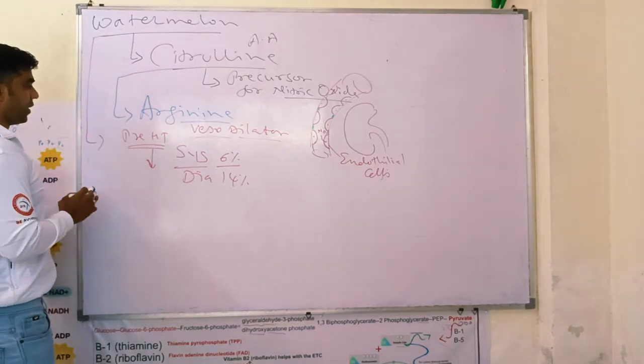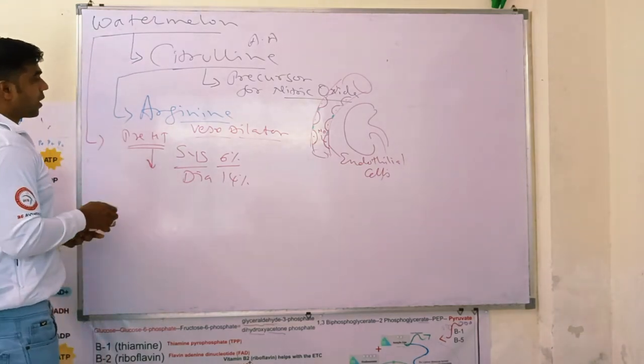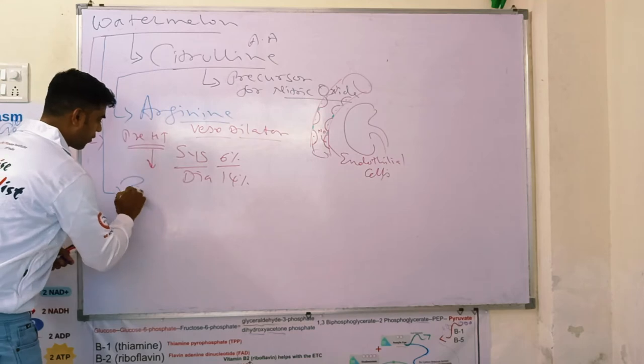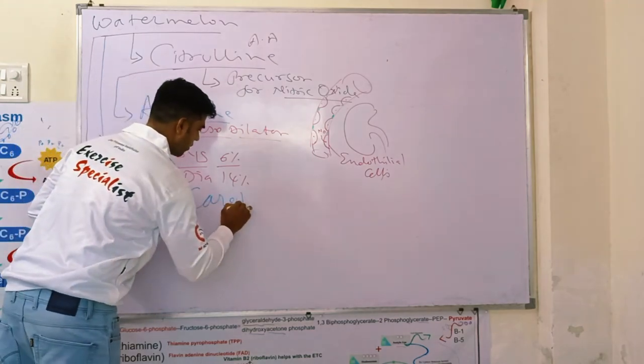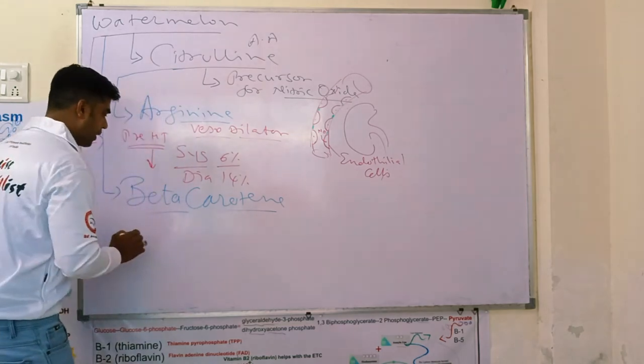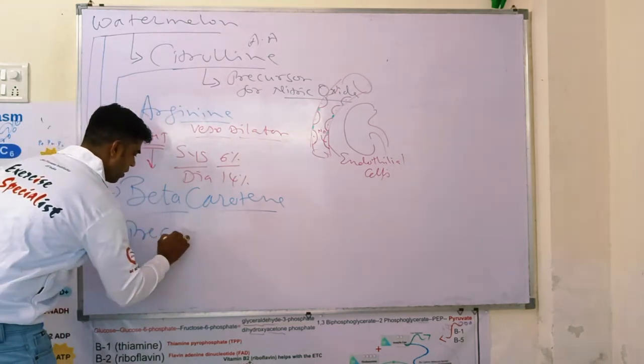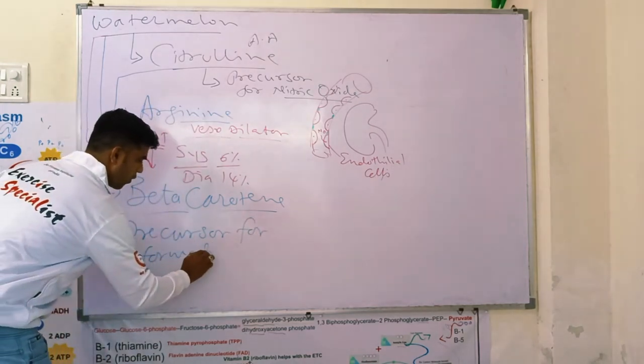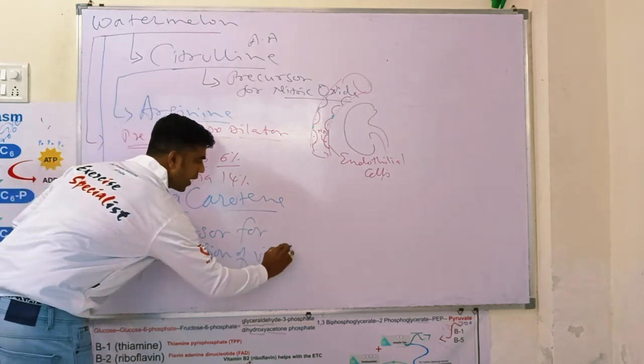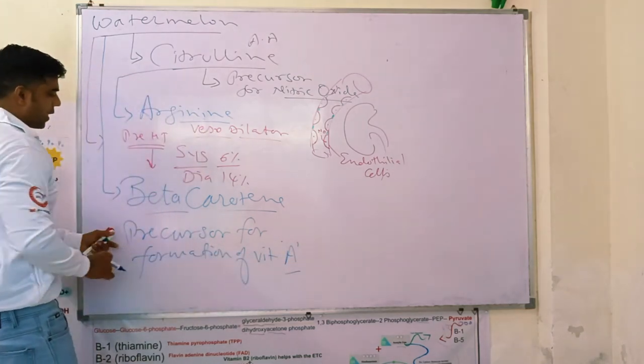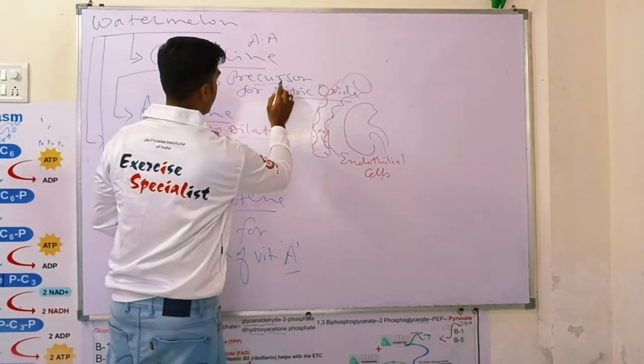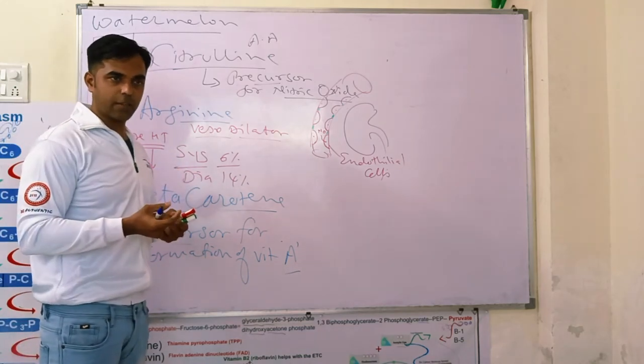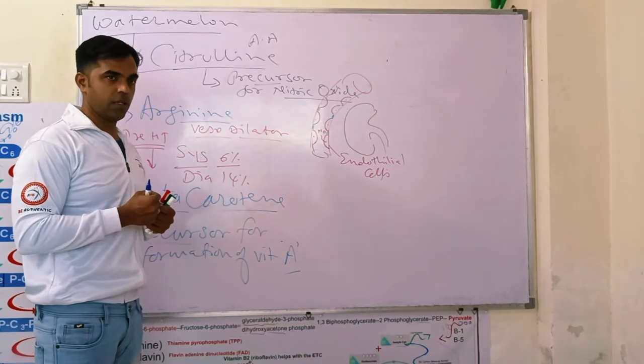Further, let's understand some more benefits. Watermelon contains beta carotene. And this beta carotene is precursor for formation of vitamin A. I hope you understand the word precursor. I have mentioned here and here. So what is precursor? Initial signal sequence while formation of any protein chain.